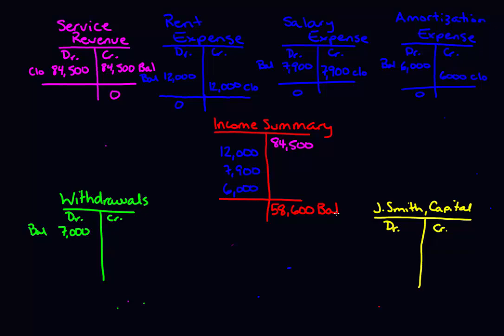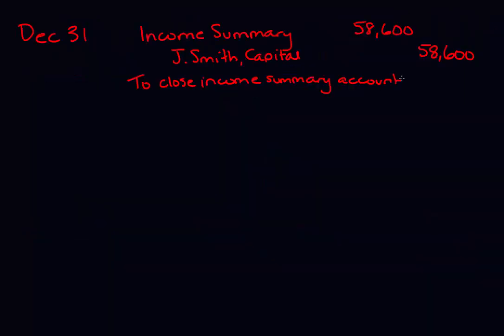Now we can finally close this into our capital account. We ask: what's the balance in income summary? It's $58,600 credit. So we want to debit the income summary account for $58,600 as our closing entry. Debits and credits always have to equal, so we're debiting income summary and crediting our capital account — that will close our income summary account. In journal entry form: debit income summary, credit J. Smith Capital for $58,600. Description: to close income summary account.